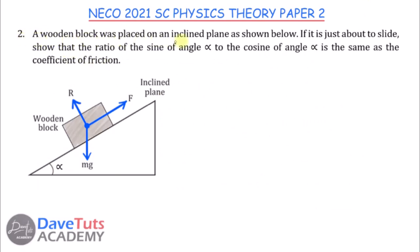In this friction question, a wooden block is placed on an inclined plane. If it is just about to slide, we must show that the ratio of sin φ to cos φ equals the coefficient of friction. The coefficient of friction is force over reaction. If the angle of inclination is φ, the frictional force F along the plane is mg sin α and the normal reaction R is mg cos α.